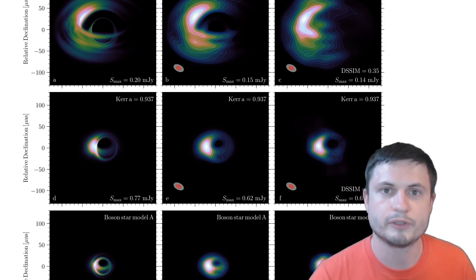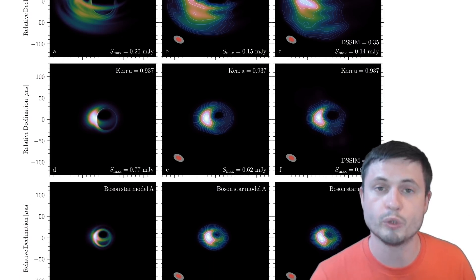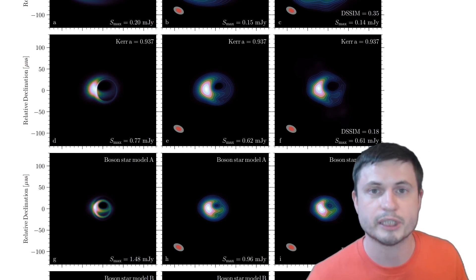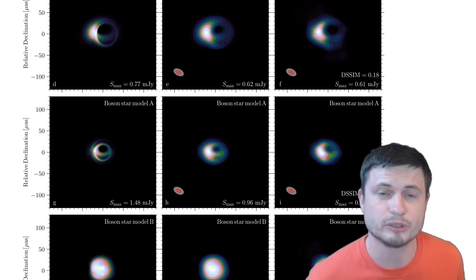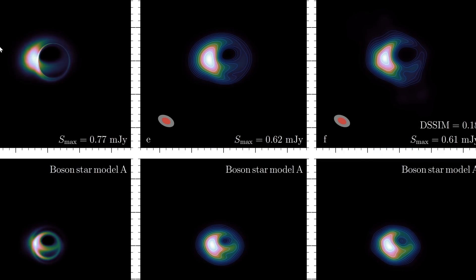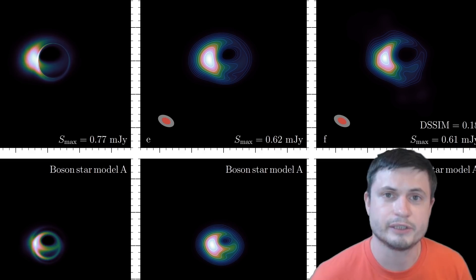And this paper has a lot of different visual simulations to show you what the main difference between black holes and boson stars would be, but for the most part they still kind of look very similar. Here I guess you can kind of see that there are some differences. This is a black hole, this is a boson star, black hole, boson star, black hole, boson star. But the similarities are still there.